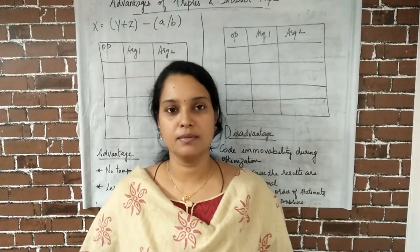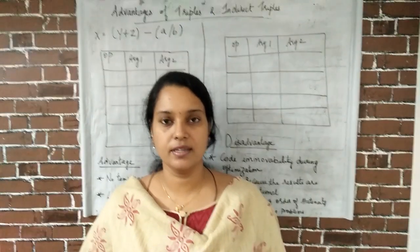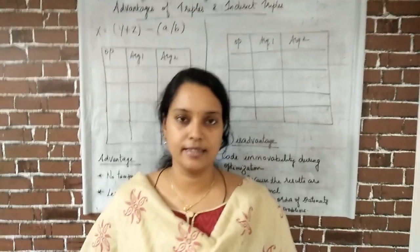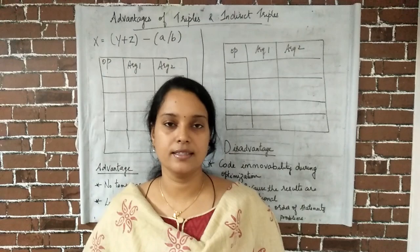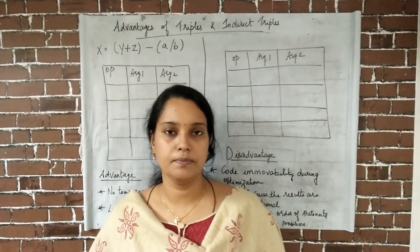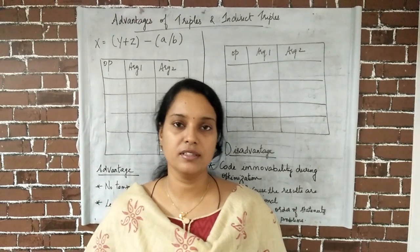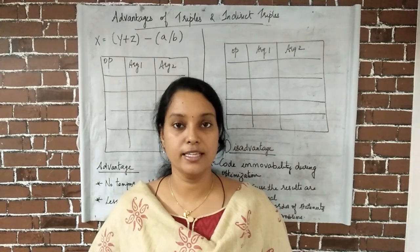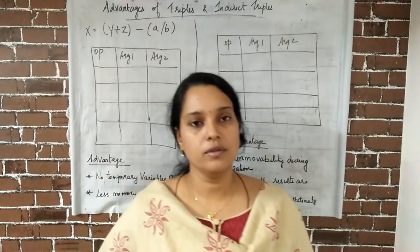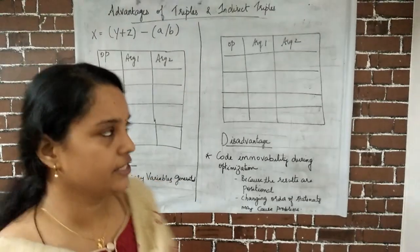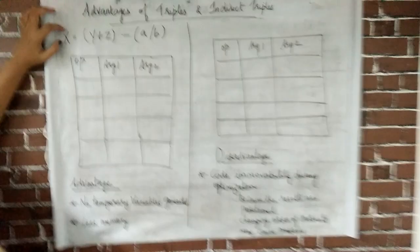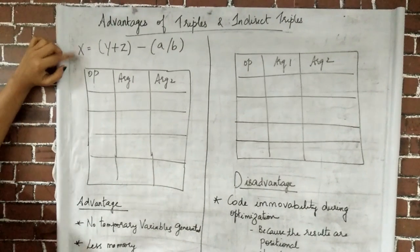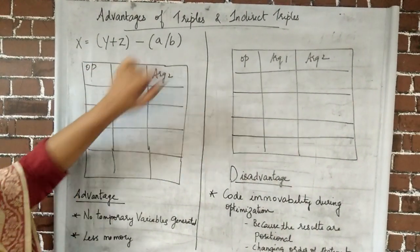Today we are going to discuss the advantages and disadvantages of triples and indirect triples. In the last class we already discussed how to construct a quadruple, a triple, and an indirect triple for a three-address code or intermediate code. Consider the expression x = (y + z) - (a / b) as our example.